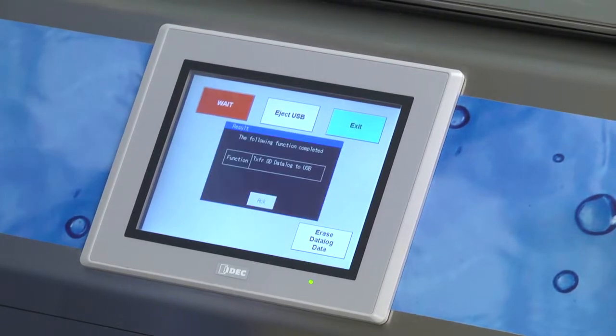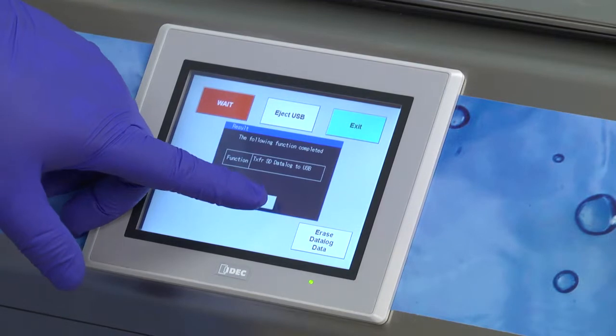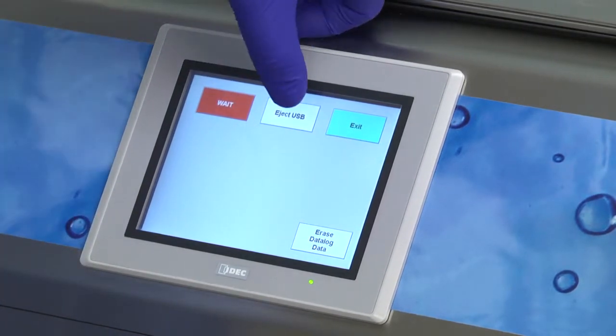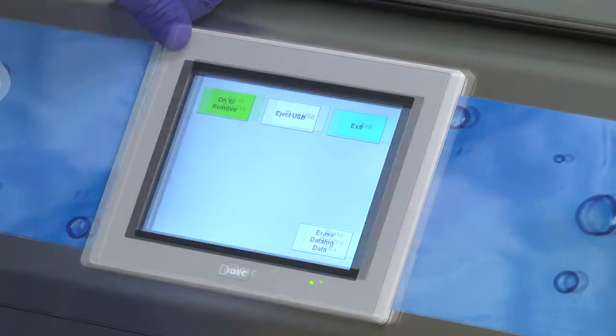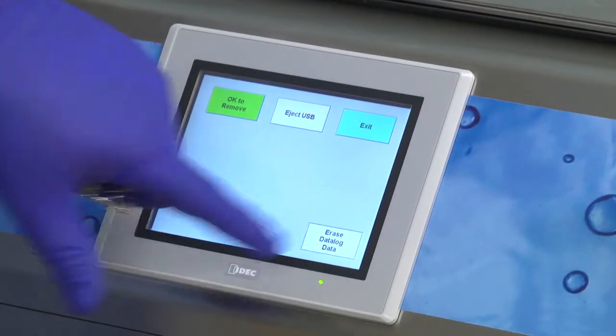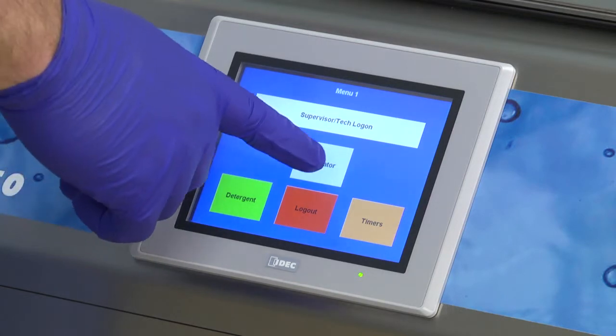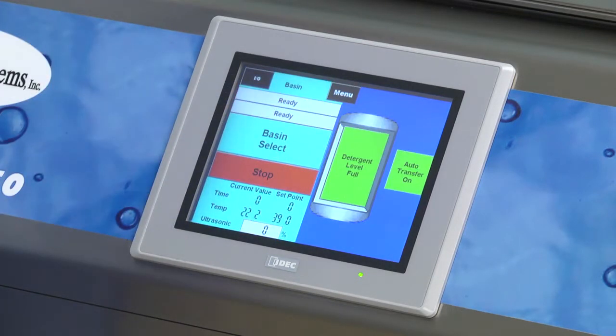Once the data is transferred, press Acknowledge and then cancel out of that menu. Press Eject USB to remove the thumb drive and, if desired, select Erase Data Log Data. To begin a cycle, go back to Menu 1 and press the Operator button, which will bring up the Basin Select screen.